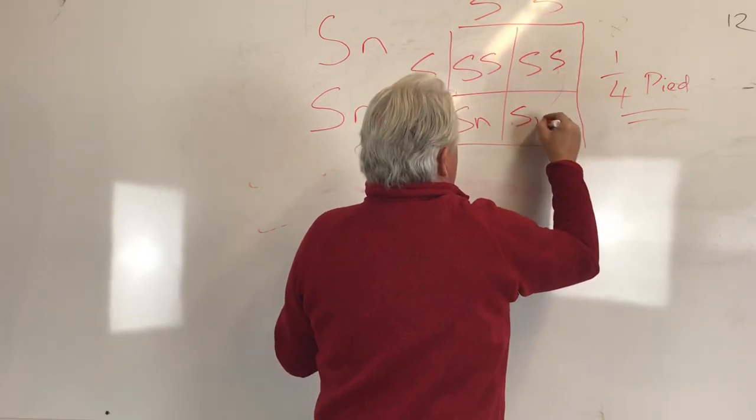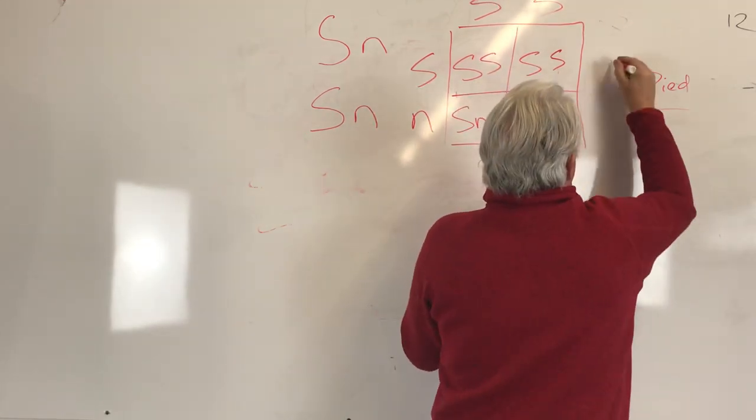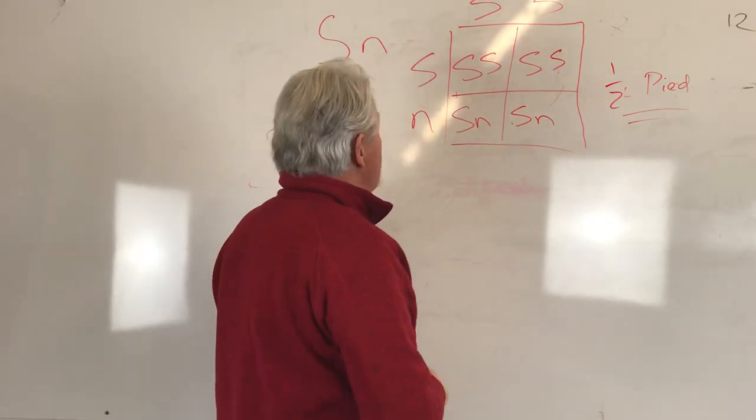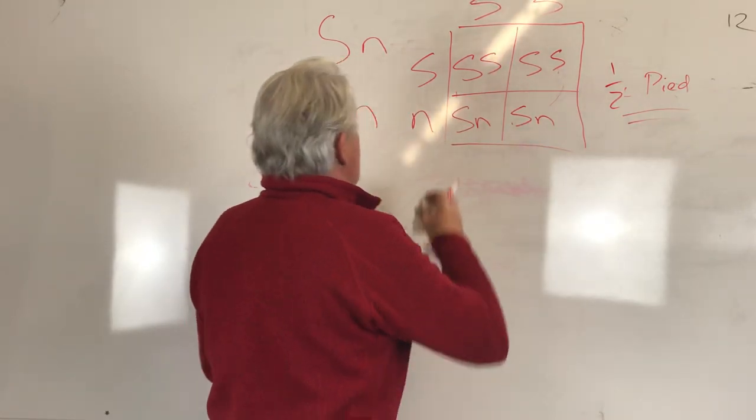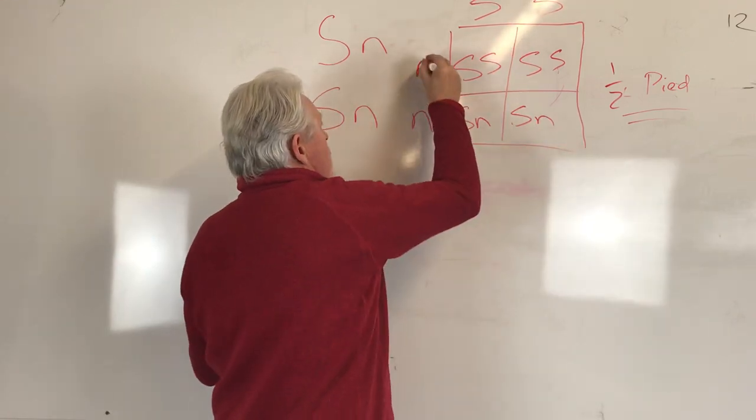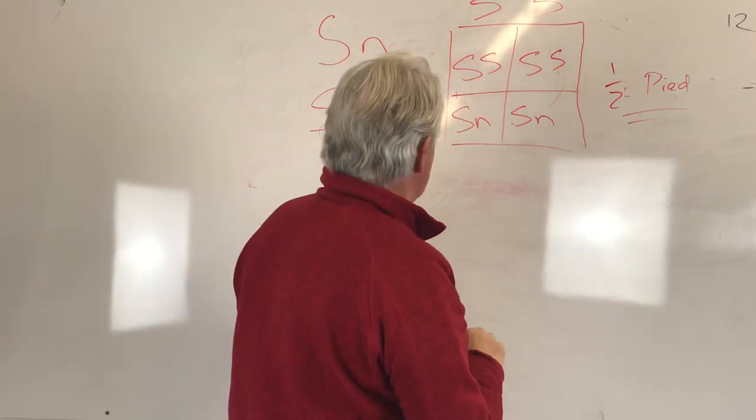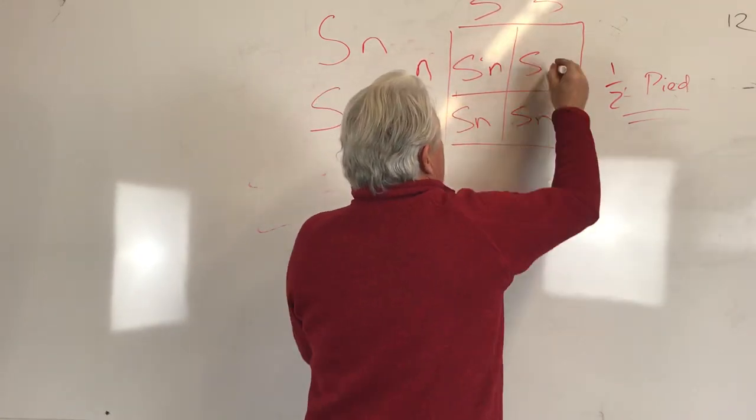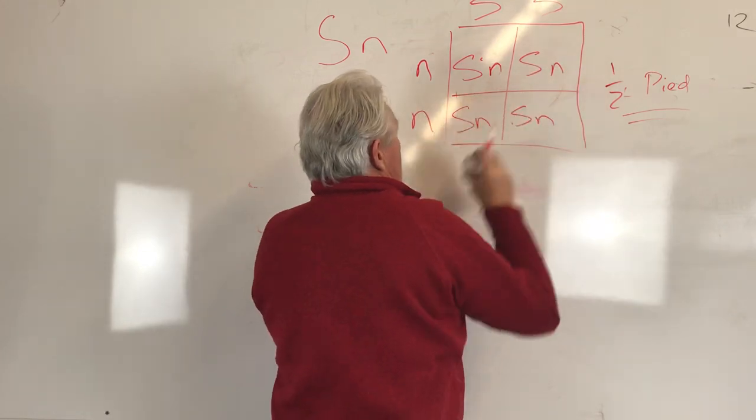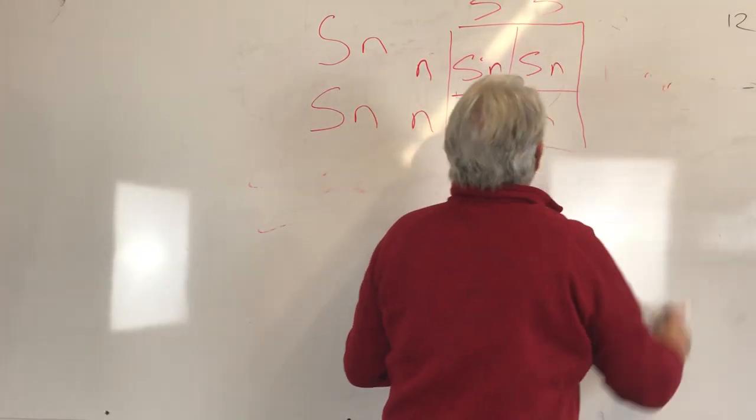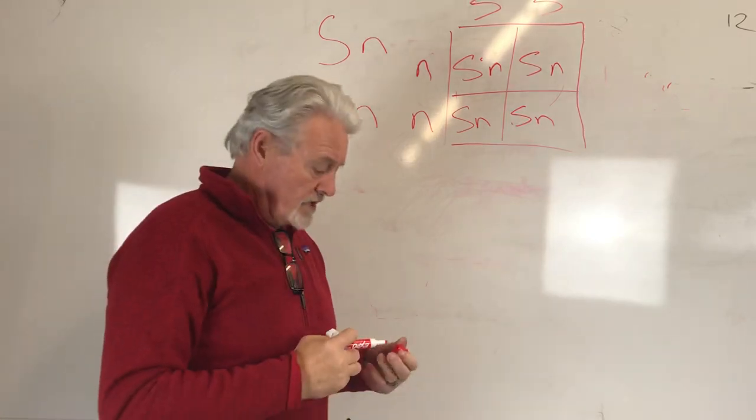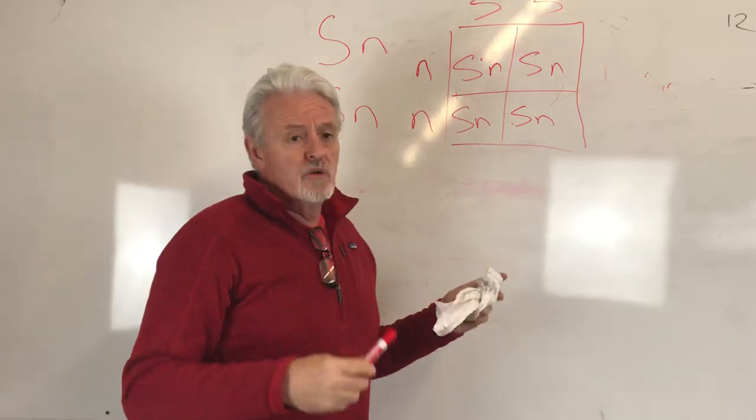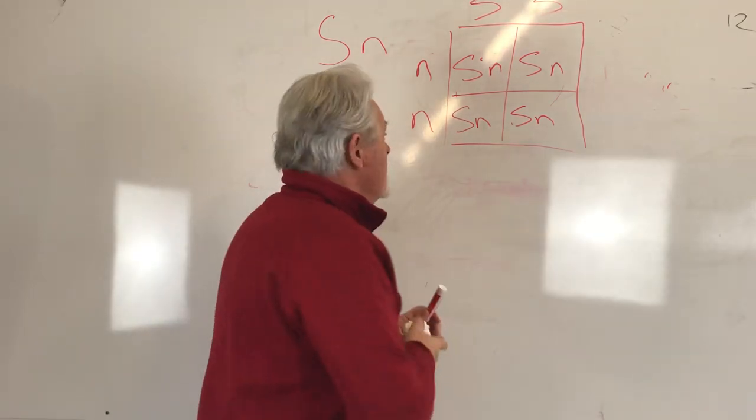Okay, and then let's put one more scenario. Let's put this dog over here as not being pied at all, no pied in that dog whatsoever at all. What do we get? We get a pied carrier, we get a pied carrier, and so we get all pied carriers. Nobody shows pied at all. So you can absolutely control how the pied gene is expressed.